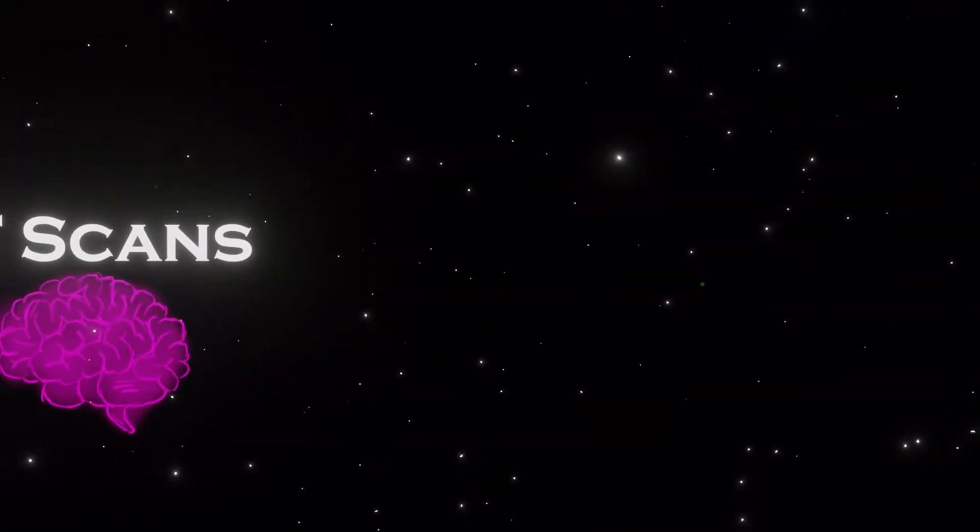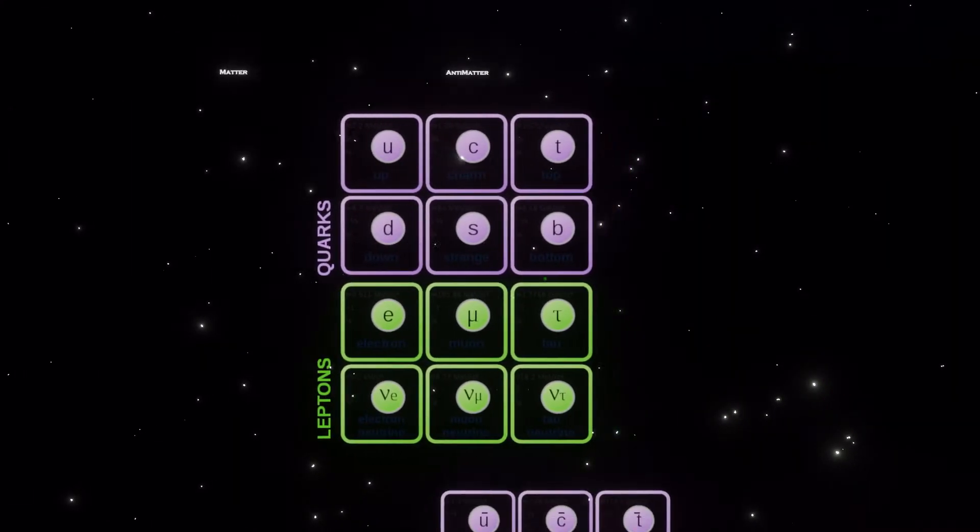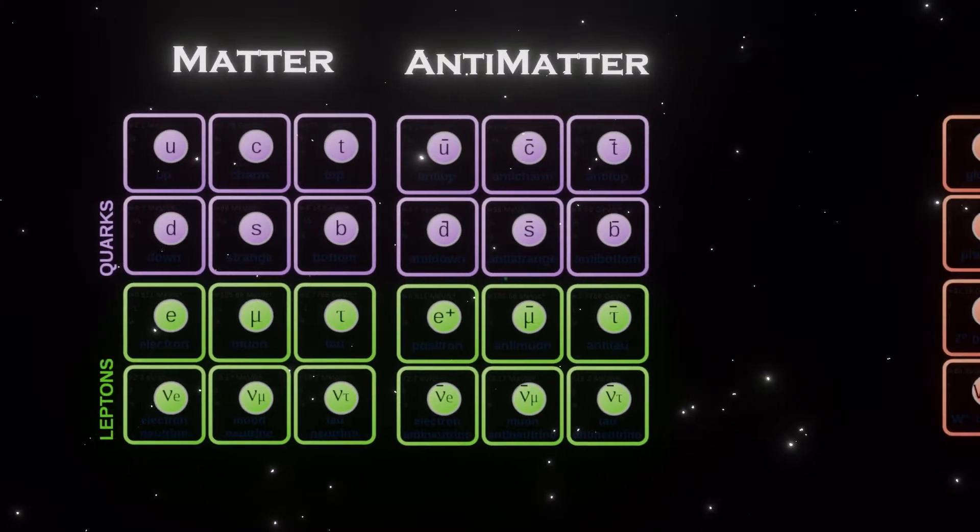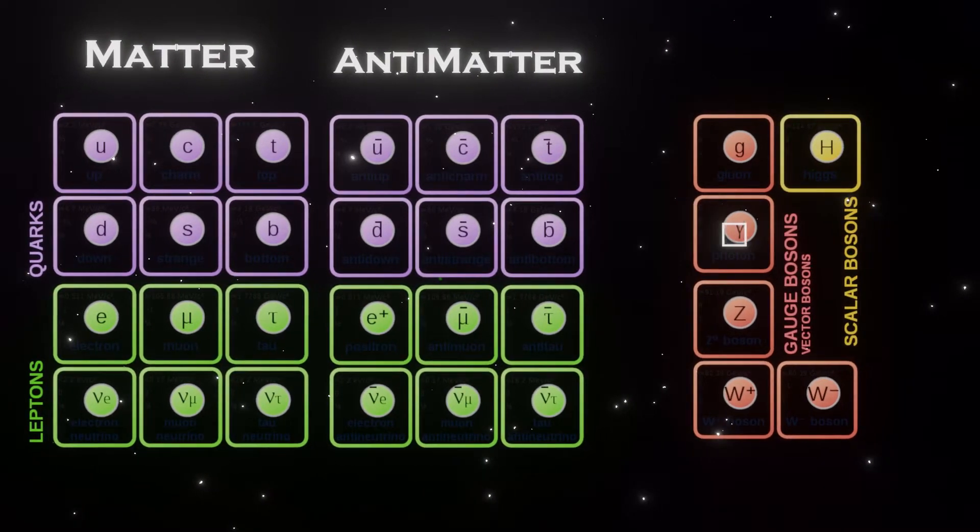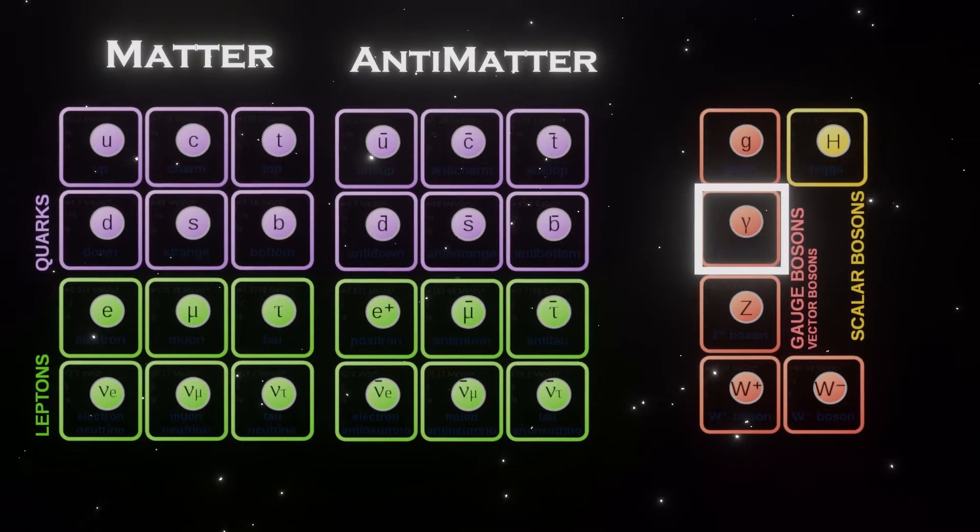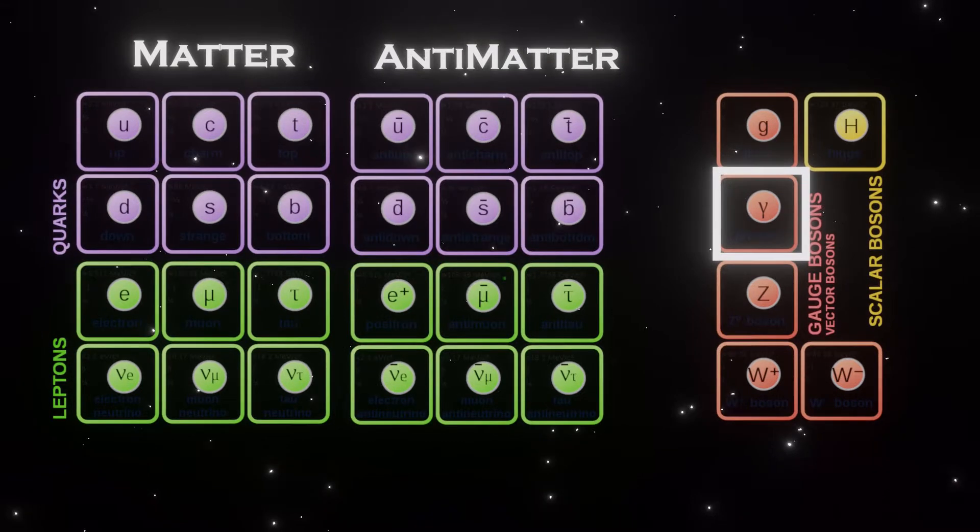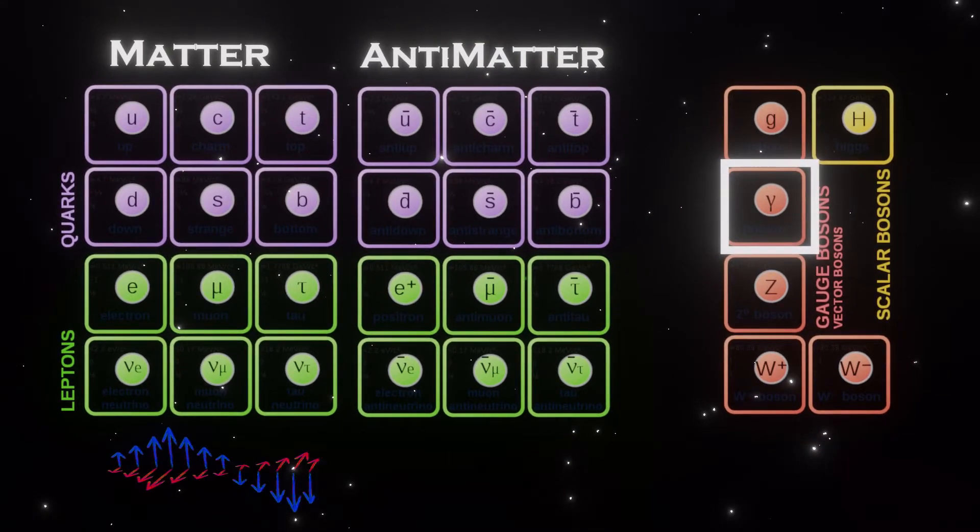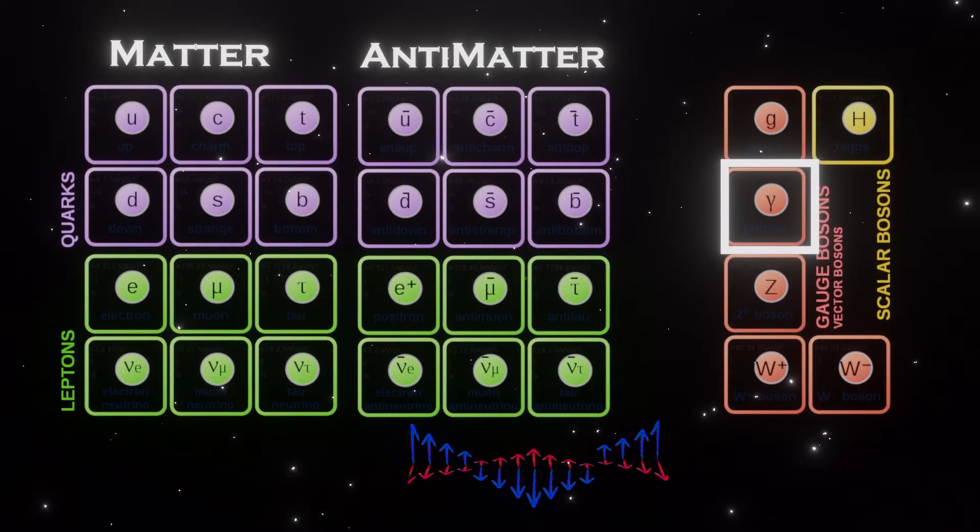Every elementary particle present in the standard model has an antimatter counterpart. In some cases, like some bosons such as photons, the particles are their own antimatter counterpart, and that is alright, as they are already massless forms of energy.